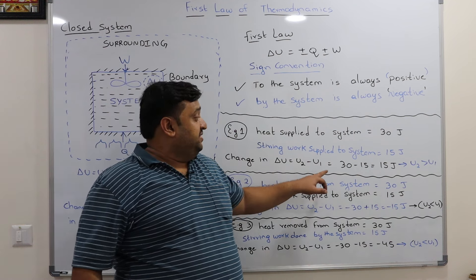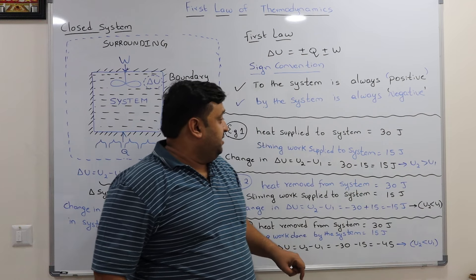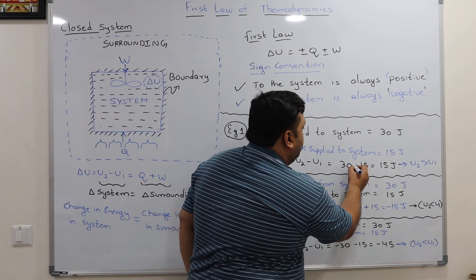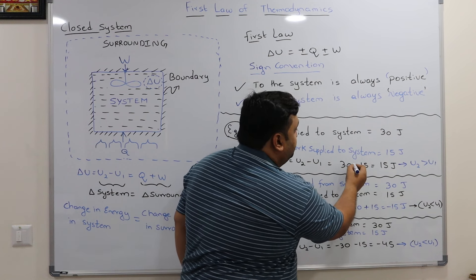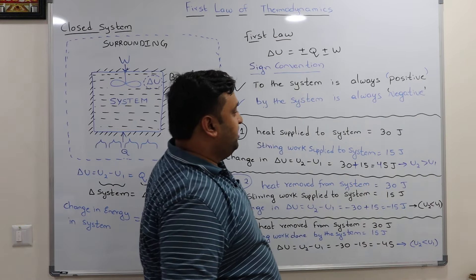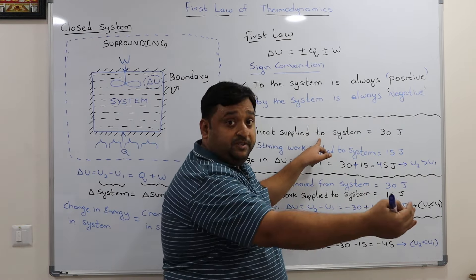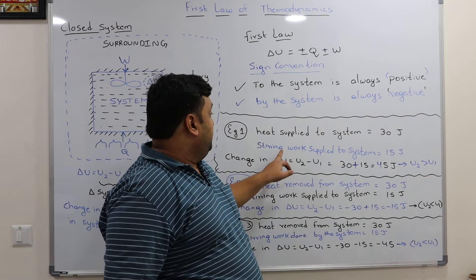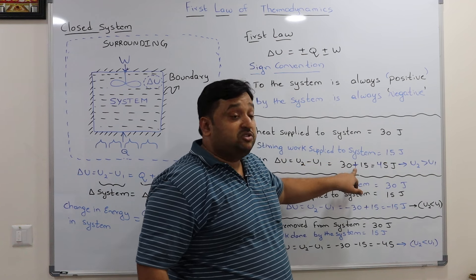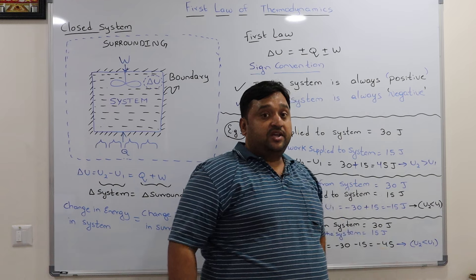Delta U = U2 - U1 = Q + W. Since both heat and stirring work are supplied to the system, both are positive by the modern sign convention. So delta U = +30 + 15 = +45 joules.